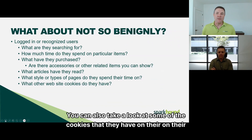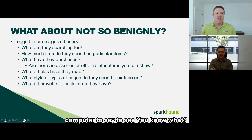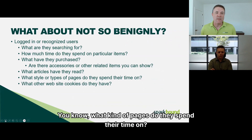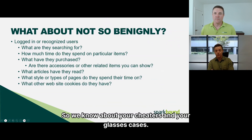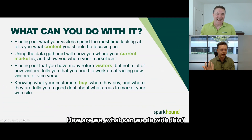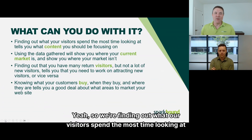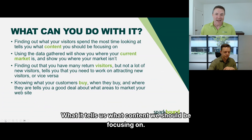You can also look at cookies on their computer to see what articles they've read and what kind of pages they spend time on, to target your products directly to that person. We're finding out what visitors spend the most time looking at — really what it tells us is what content we should be focusing on. If you've got ten articles on how to make pie but one article on how to grill steak with ten times more views, you may want to focus on steak. It's direct feedback from your audience.